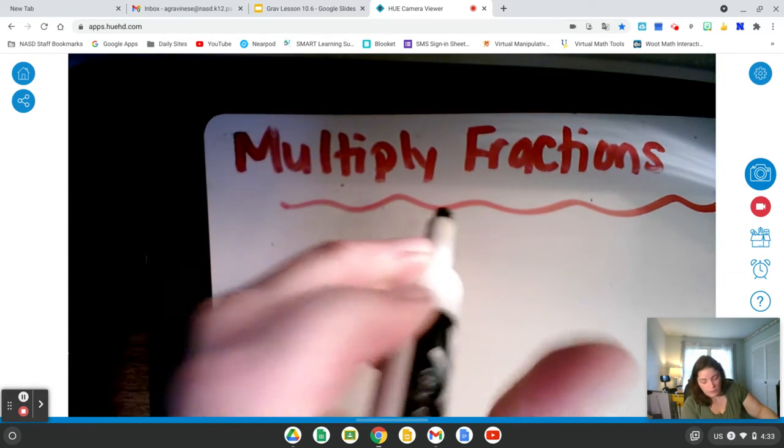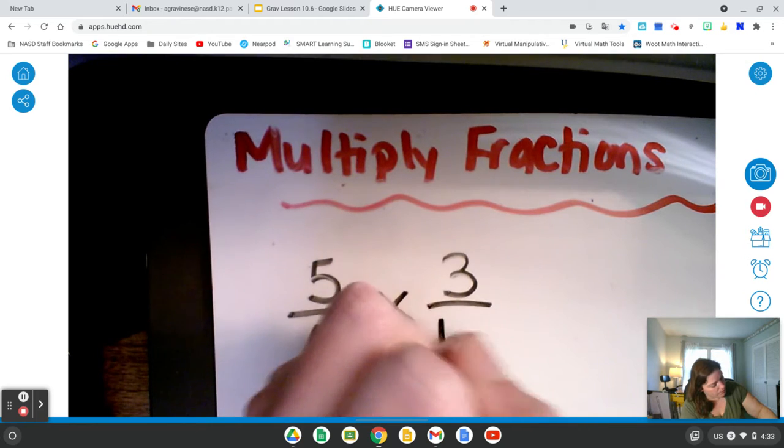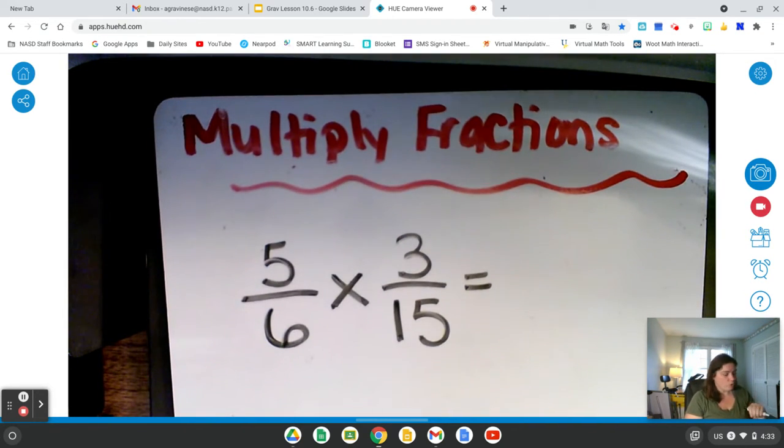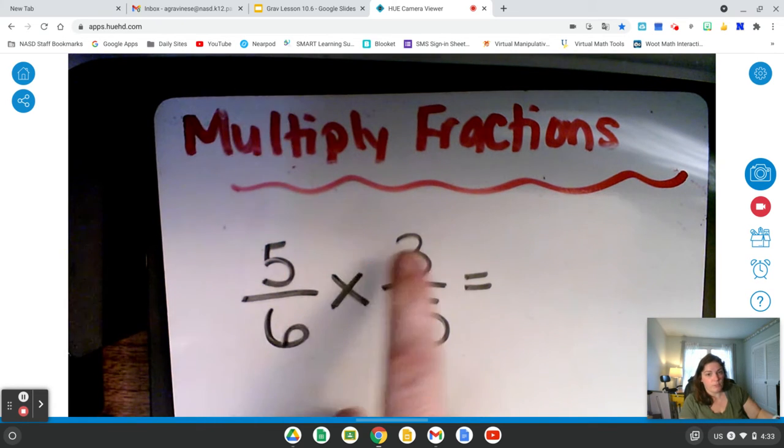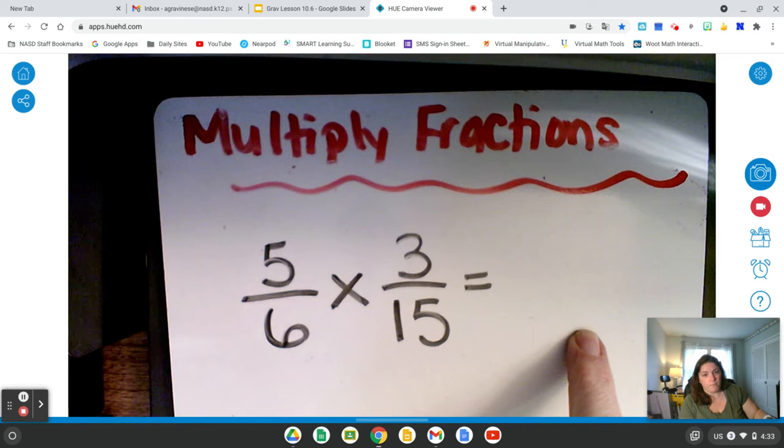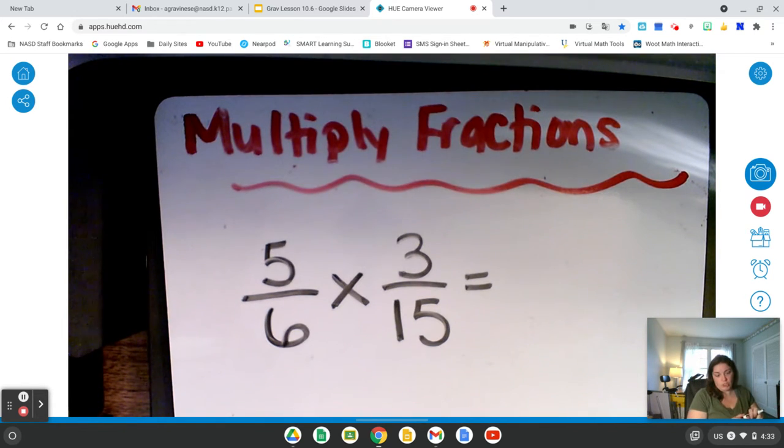I'm going to show you another example where you can use that method. 5/6 times 3/15. Now, again, for sure, you could go 5 times 3 and 6 times 15. All right? And we can definitely do that. So let's check it out.